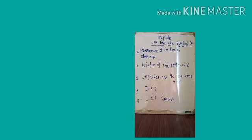Due to the rotation of the earth, the length and direction of shadows change. In the early morning and evening, we experience long shadows falling in the west and east respectively.